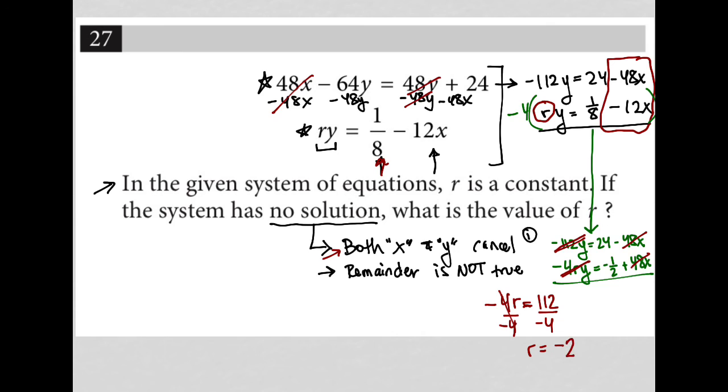So r has to equal negative 28 in order to make that y term cancel out. When that cancels out, I'm left with 0 equals 24 minus 1/2, which is 23 and 1/2, which is not true. That's the second part: the remainder is not true. This confirms that my answer is correct. Negative 28 is the correct answer.